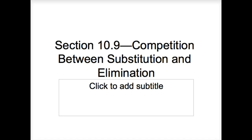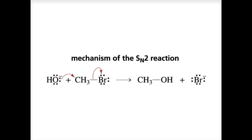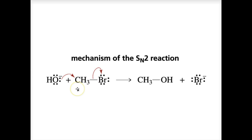Let's now look at competition between substitution and elimination, but first let's review the mechanisms. The SN2 reaction is a concerted reaction because it occurs in a single step with no intermediate formed. The nucleophile attacks the carbon bearing the leaving group and displaces it. The carbon undergoes a backside attack because the leaving group blocks the nucleophile from the front side of the molecule, so it comes in from the back side.